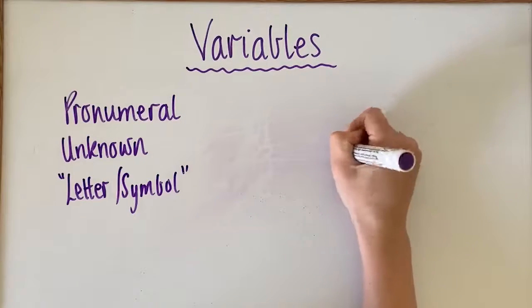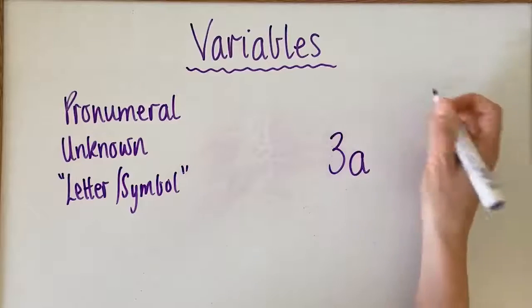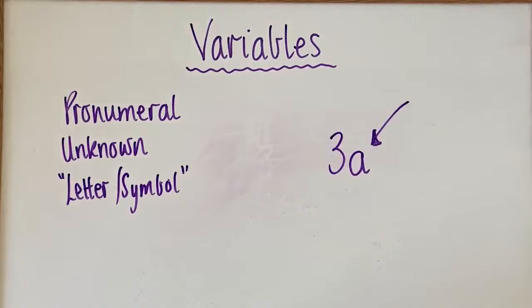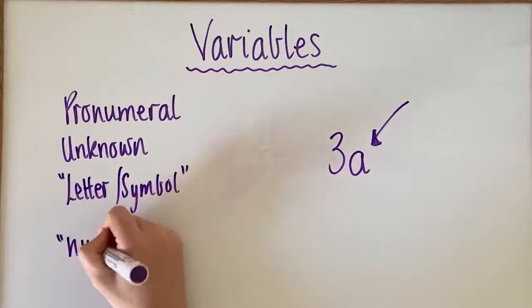Okay, so in this circumstance, a is our variable because it is a number in disguise. That's another good way to think about it.